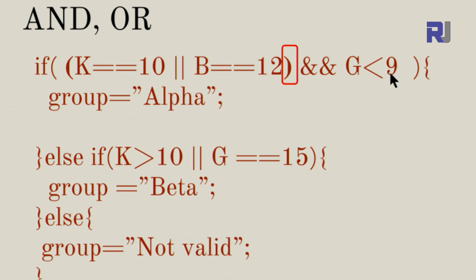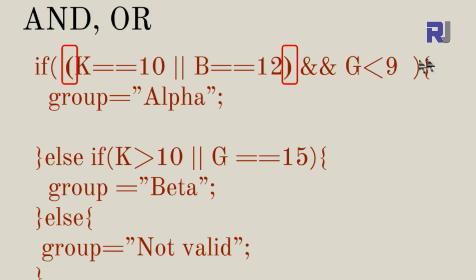In that combined condition, the parenthesized OR part must be true AND G < 9 must be true for the whole statement to be true, assigning 'alpha' to group. You can combine as many conditions as you want — 10, 20, whatever — and use parentheses to group them logically.